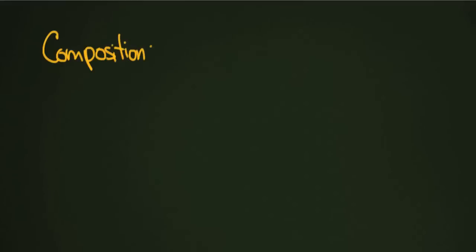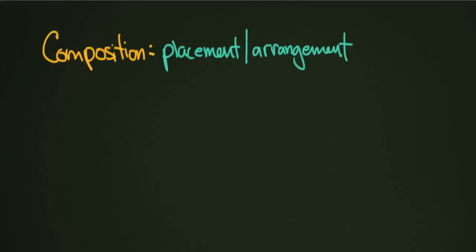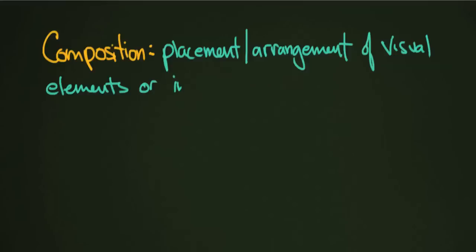Do you ever wonder how photographers decide how to set up their photograph — what to put where and why? This process is called composition, and it's basically how you put together a photograph. The definition, as found in most dictionaries, would be something along the lines of the placement and arrangement of visual elements or ingredients in a work of art or photograph. Another way of defining it is simply 'putting together' — how you arrange the photograph.